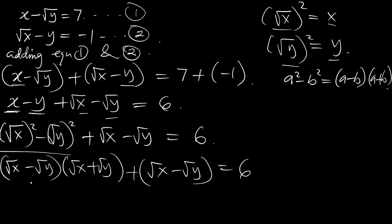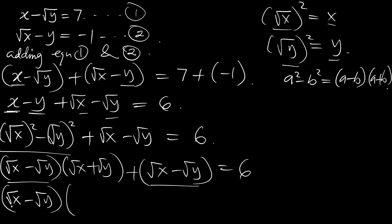So that means this is the same as saying: the square root of x minus the square root of y, times the square root of x plus the square root of y, plus the square root of x minus the square root of y, equals 6. Now the square root of x minus the square root of y is common, so we factor it out. You get the square root of x minus the square root of y, times the square root of x plus the square root of y plus 1, equal to 6.